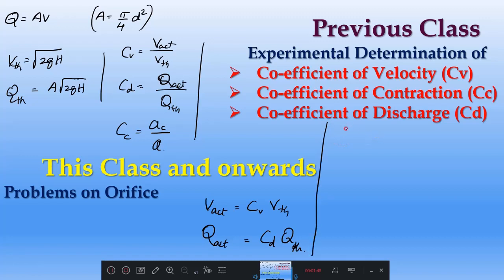Whatever the problem may be, first you try to find out V theoretical. How to find this V theoretical? We have one equation, root 2gH. But many cases they may not directly give you H for this V theoretical. You should know how you got this V theoretical—you got it by deriving.